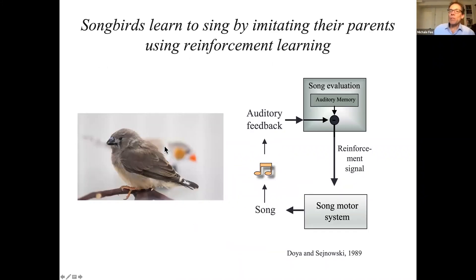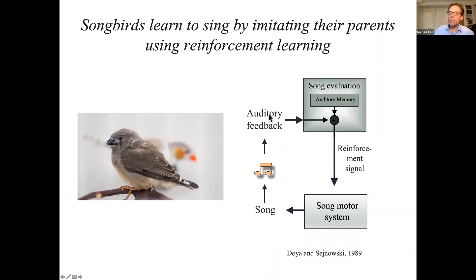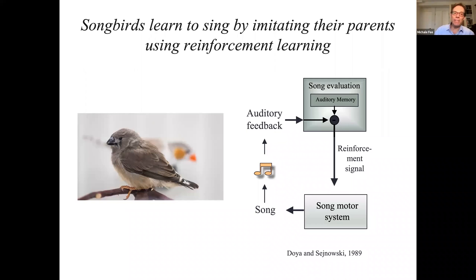Young songbirds learn their songs by imitating their parents. The basic framework for how we think this happens is reinforcement learning. The idea is that young birds produce a highly variable song, and by listening to themselves sing, they compare those produced songs to an auditory memory of the tutor song. This produces a reinforcement signal that's used to modify the motor circuitry, reinforcing good song variations and suppressing bad song variations.